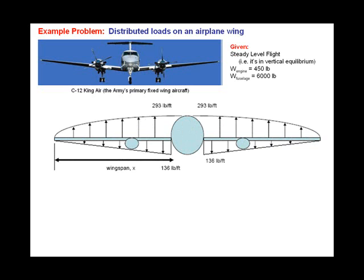Like most aircraft, the fuel is stored in the wings, and to minimize the bending moments, the aircraft's fuel weight has a triangular distribution. The aircraft is in steady-level flight, means the lift produced by the wings equals the aircraft's total weight, i.e. it's in vertical equilibrium. Each of the aircraft's turboprop engines weighs 450 pounds, and the fuselage weighs 6,000 pounds.